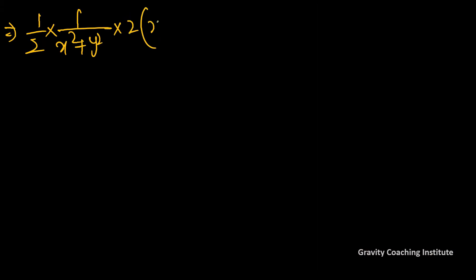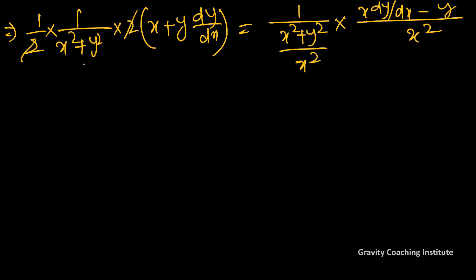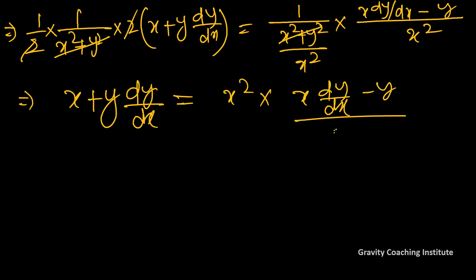और 2 common लेने से यह होगा x plus y dy upon dx equal to, और इसमें लेंगे तो यह होगा 1 upon (x square plus y square) upon x square, multiply करेंगे, x square cancel होगा, so implies that x plus y dy upon dx equal to x square into (x dy upon dx minus y) upon x square, और x square cancel हो जाएगा।